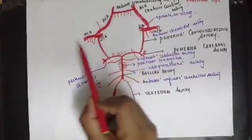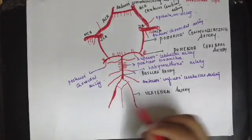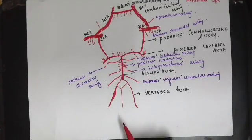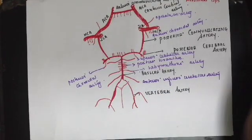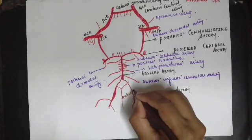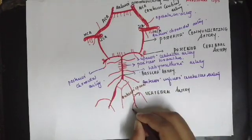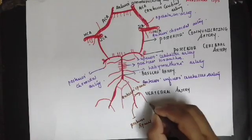Posteriorly you have the posterior median group of arteries and the posterolateral group. The vertebral artery gives rise to the anterior spinal artery, the posterior spinal artery, and the posterior inferior cerebellar artery. These are the branches of the vertebral artery.